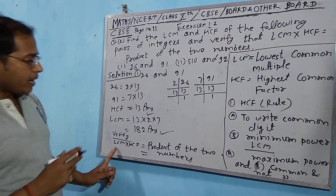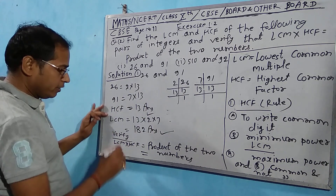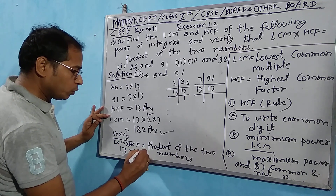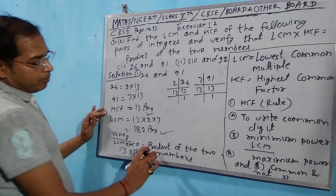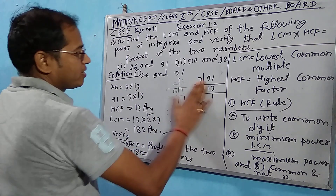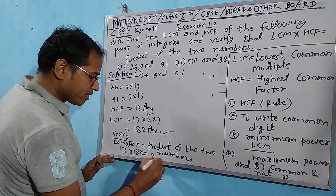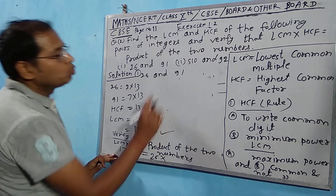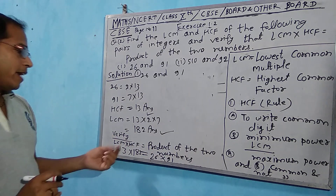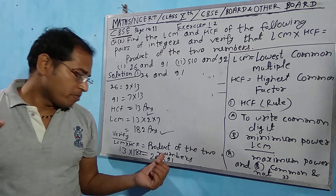Now verify that LCM × HCF is equal to the product of the two numbers. Write LCM first. LCM came out to be 182, and HCF came out to be 13. The first number is 26, the second number is 91. So we check: LCM into HCF equals product of the two numbers.